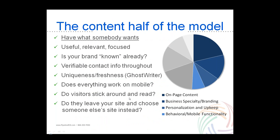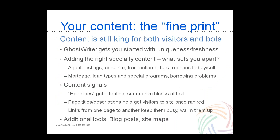To make sure people stick around and don't find your competition more interesting, you've got to have the right content. Content is still king, and Ghost Rider will get you started with unique and fresh material, but to be as interesting as possible, you need the right specialty content — something different that sets you apart. On real estate, you should really emphasize listings pages first and foremost. People do want to shop, but listings are kind of a cheap commodity — you're up against Zillow, Homes.com, and Realtor.com, and visitors won't know the difference between your data and theirs.